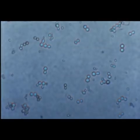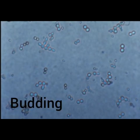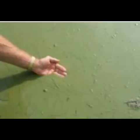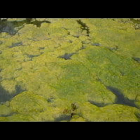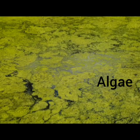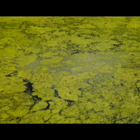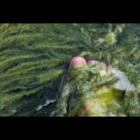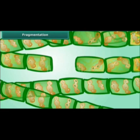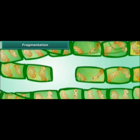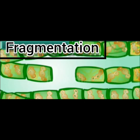Thus, a number of yeast cells are formed in a short time through budding. You might have seen these green slimy patches in stagnant water bodies like ponds or fields. These aquatic water plants are called algae. When sufficient nutrients are available in water, they multiply rapidly. These hair-like plants break up automatically into pieces or fragments. This method of reproduction is called fragmentation.